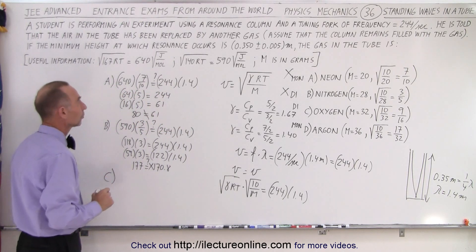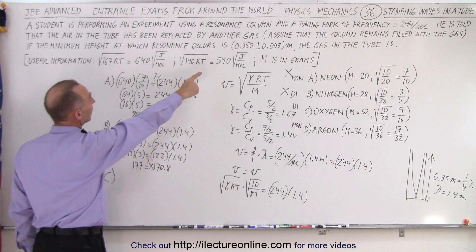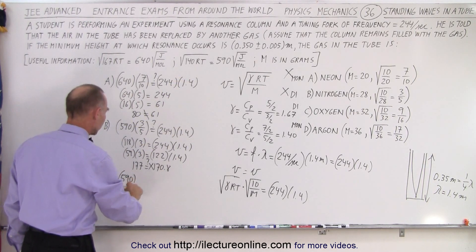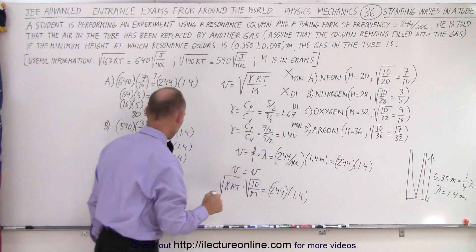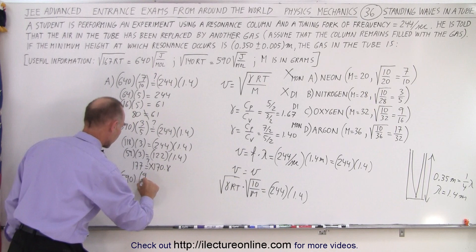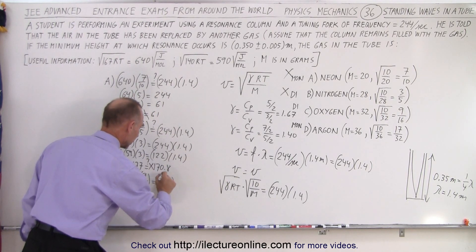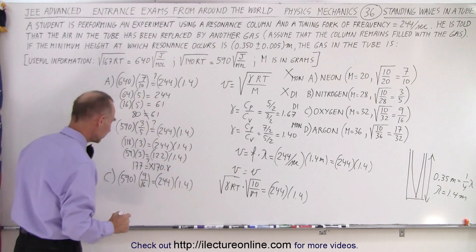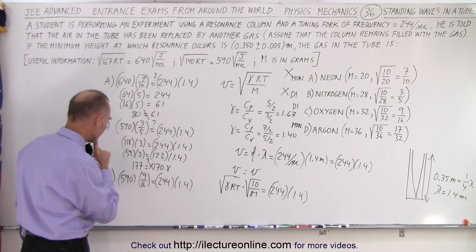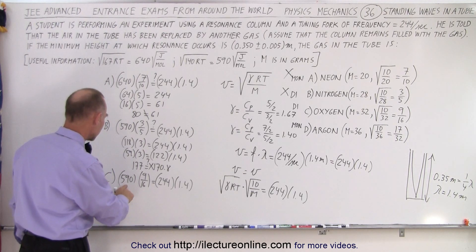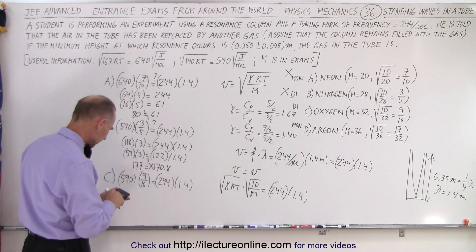Now we do the same for C. Again, we're dealing with a diatomic molecule, oxygen. So we take 590 multiply times the square root of 10 divided by the molar mass, which is 9 over 16. And that is equal to 244 times 1.4.